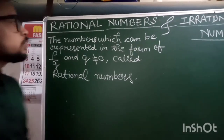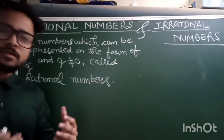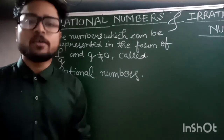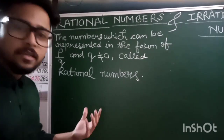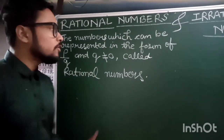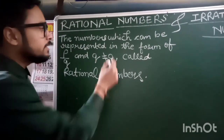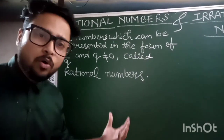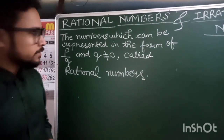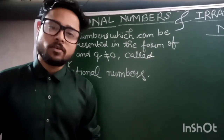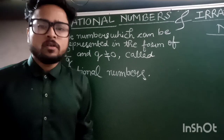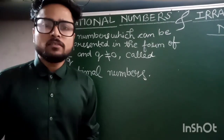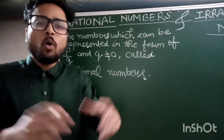So we are going to talk about rational numbers and irrational numbers. What are rational numbers? The numbers which can be represented in the form of P by Q, where Q is not equal to zero — we call these rational numbers.